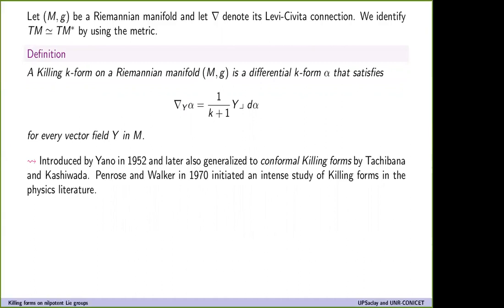Sometimes I will identify the tangent space with the dual tangent. In this context, a differential form is a killing form if it satisfies the equation for the covariant derivative. This is equivalent to saying that the covariant derivative of the form is skew-symmetric. These forms were introduced by Yano in the fifties as a generalization of killing vector fields.